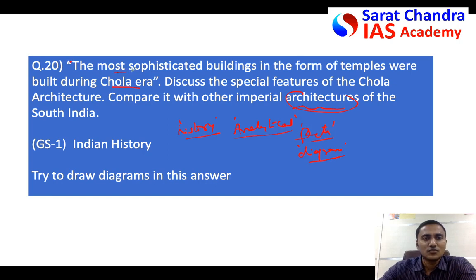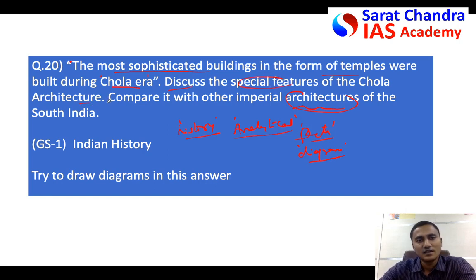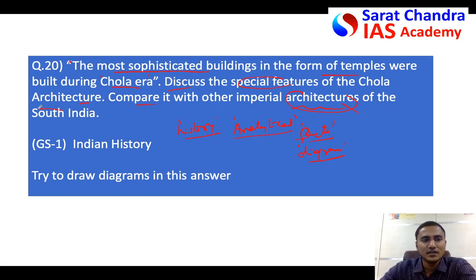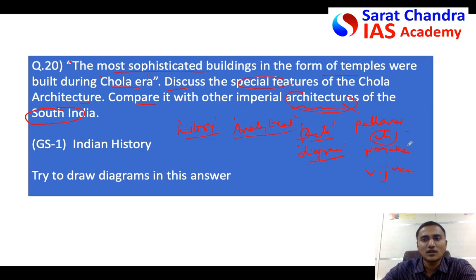The statement says: 'The most sophisticated buildings in the form of temples were built during the Chola era.' The question asks you to discuss the special features of Chola architecture, and also to compare it with other imperial architectures. The other imperial architectures of South India broadly fall under the Pallavas, the Cholas, the Nayakas, and before the Nayakas, the Vijayanagara. So you compare the Cholas with the remaining three.